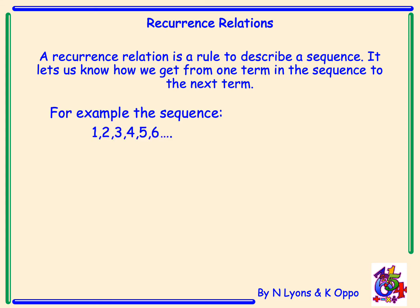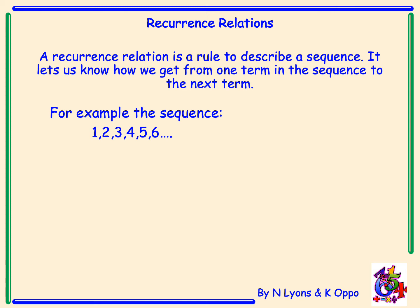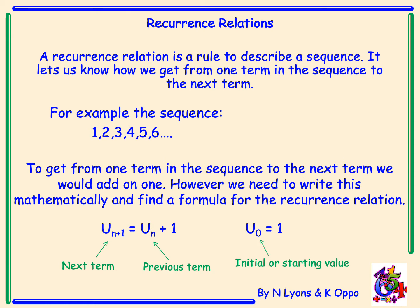if we look at the sequence 1, 2, 3, 4, 5, 6, to get from one term in the sequence to the next term we would add on 1. However, we need to write this mathematically and find a formula for the recurrence relation. We could say that u_{n+1} equals u_n add on 1, with u_0 equals 1. u_{n+1} is the next term in the sequence, u_n is the previous term, and u_0 is your starting or initial value.